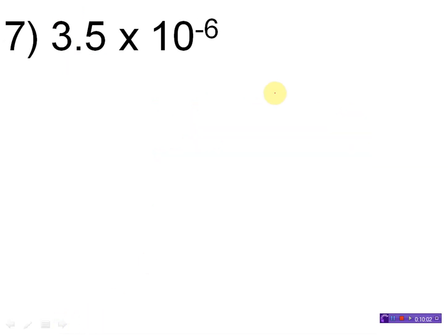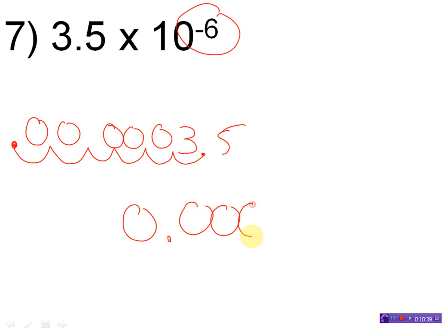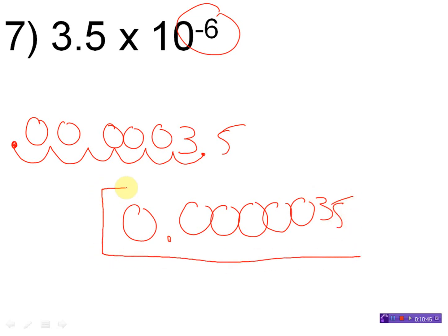3.5 times 10 to the negative 6. Now the decimal point is going in the opposite direction. I have a negative exponent, so my final answer must be a number that's less than 1 and greater than 0. Moving the decimal six places this way: one, two, three, four, five, six — the decimal point goes way over there. I fill in with zeros: 0.0000035.